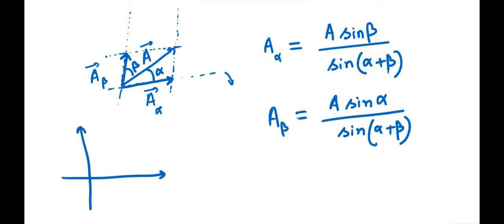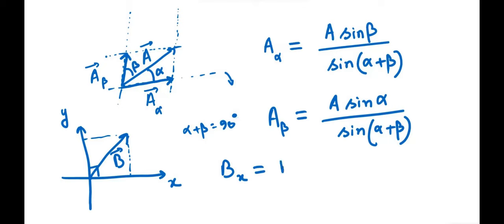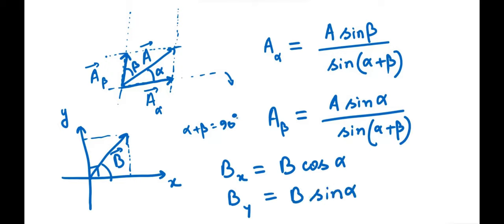Oftentimes, we want to resolve a vector into components perpendicular to each other. For example, along the x-axis and y-axis, with vector b at angle α: bx = b·cos(α) and by = b·sin(α). We don't have to specify the other angle because it's constrained by the 90-degree requirement. You still need two pieces of information, though the other angle is specified through that constraint.